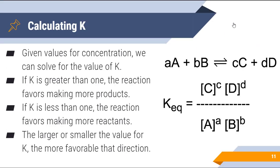So if we're given concentration values, we can easily solve for the value for K. We just write our equation, plug in the values for our concentration, and solve. If K is greater than one, then the reaction favors making more products. If K is less than one, then the reaction favors making more reactants. The magnitude of K tells you a lot about the reaction — it tells you by how much it favors reactants or products. If we have a really large value for K, then the reaction essentially goes to completion from reactants to products. If K is very, very small, then we will have almost no products produced in the reaction.